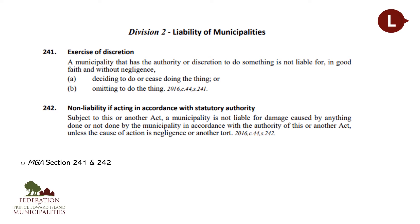the liability protections don't exist for activities and actions carried on by council that were actually outside of the authority granted to them in the MGA. If the municipality has the authority to do something, and they do it in good faith with no negligence involved, then they will not be held liable for deciding to do the thing, ceasing to do it, or omitting to do it. Any time an activity, decision, or initiative is proposed, it's a good idea to double-check and identify where the authority to take this action comes from.